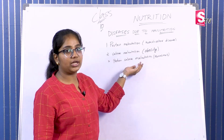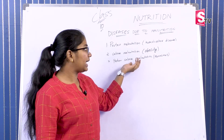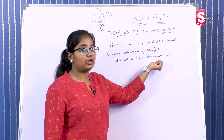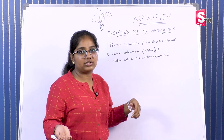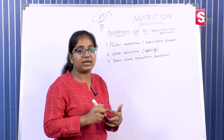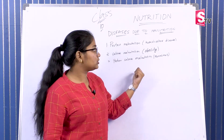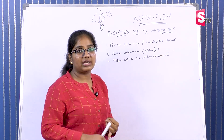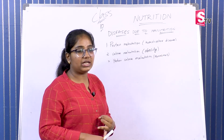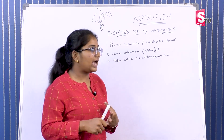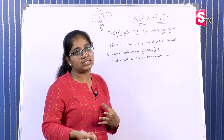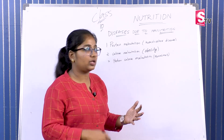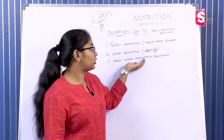Protein-calorie malnutrition has two deficiency diseases. One is Marasmus. If a mother has two pregnancies very close together, the child from the first pregnancy may develop Marasmus. The child becomes weak with low immunity.